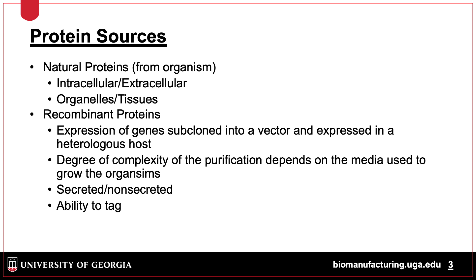Starting material for protein purification can be from a variety of sources, including organisms found in environmental sources, organs, and other tissues from animals, and recombinant proteins. Recombinant proteins can be produced inside the cell or secreted, and a variety of tags can be artificially added to the protein to facilitate purification or detection.